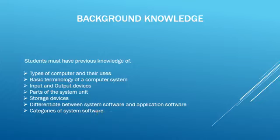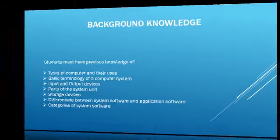Now about software — there are two broad categories: system software and application software. System software can be further categorized into operating systems, utility programs, device drivers, and language translators. Here we have selected the principal component of system software, that is the operating system.